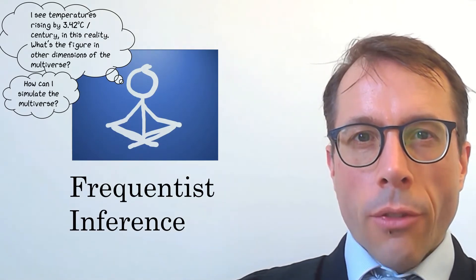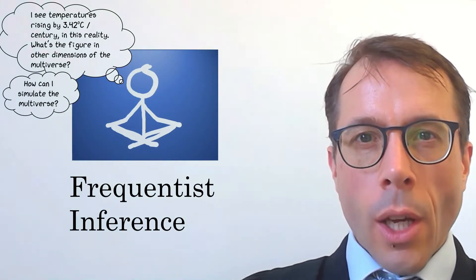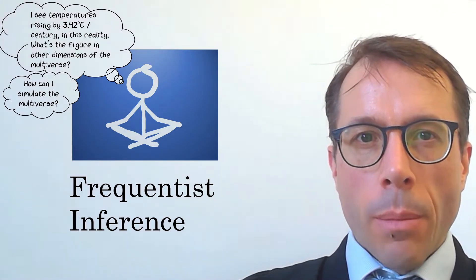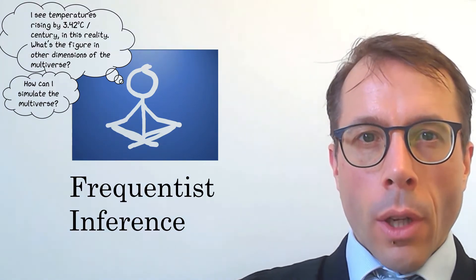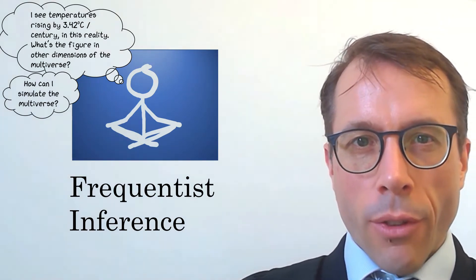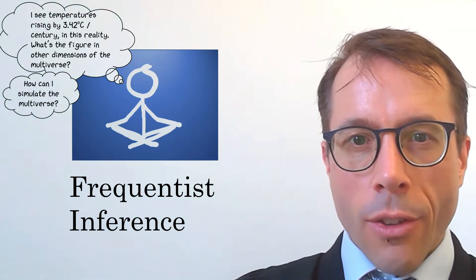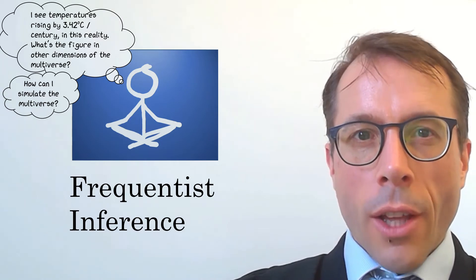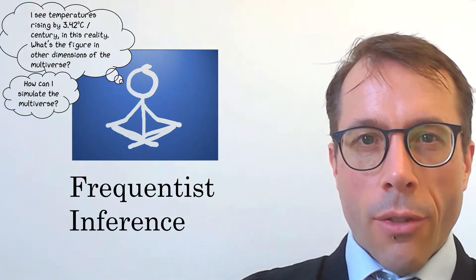Let's remind ourselves what they're about. Frequentist inference says that the data we happen to see in our reality can be misleading because of noise, and what we should do is look across the whole multiverse and think of all the parallel universes, each with its own version of the data set and its own data scientist, and see what estimates all those parallel data scientists made.